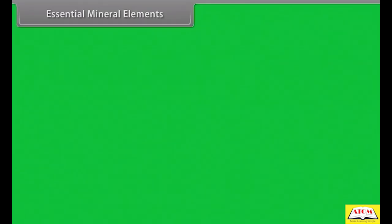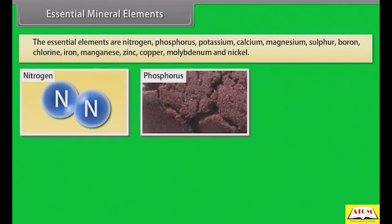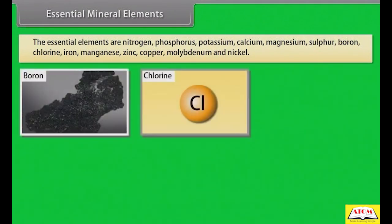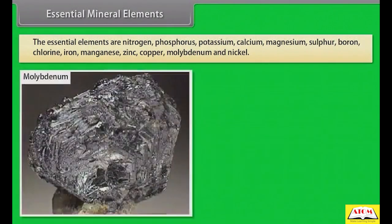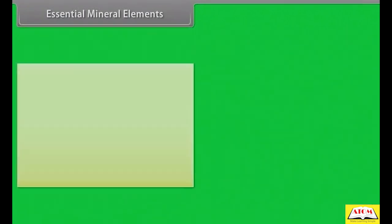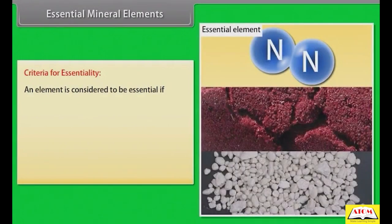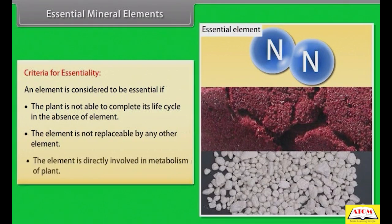Essential mineral elements include: Nitrogen, Phosphorus, Potassium, Calcium, Magnesium, Sulfur, Boron, Chlorine, Iron, Manganese, Zinc, Copper, Molybdenum, and Nickel. Criteria for essentiality: an element is considered to be essential if the plant is not able to complete its life cycle in the absence of the element, the element is not replaceable by any other element, and the element is directly involved in the metabolism of the plant.